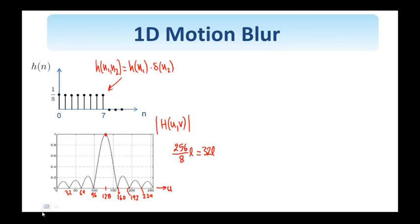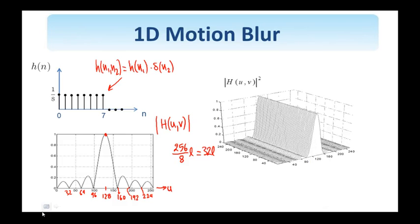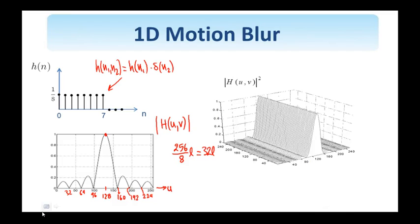So there are exact zeros at these discrete frequencies. If I look at the two-dimensional frequency response, the magnitude squared looks like this. It's this sinc function along the u-axis. The shape changes along u but does not change along v. It's independent of v. This is the frequency response of the system that is introducing the one-dimensional motion blur, and this is what we want to invert.